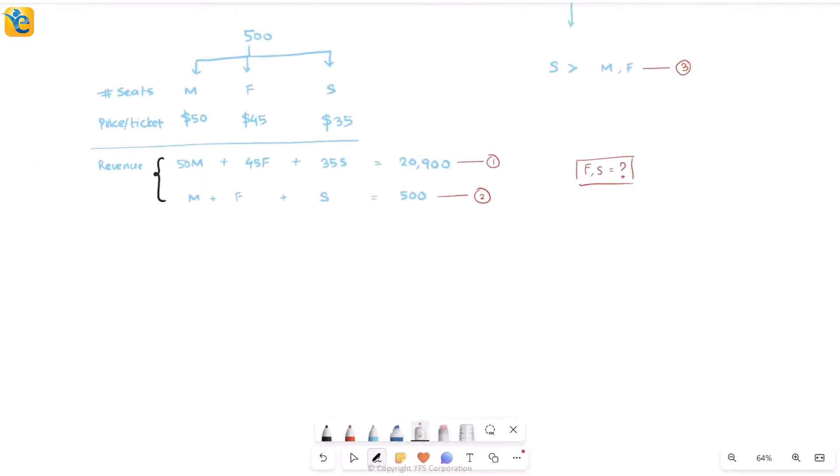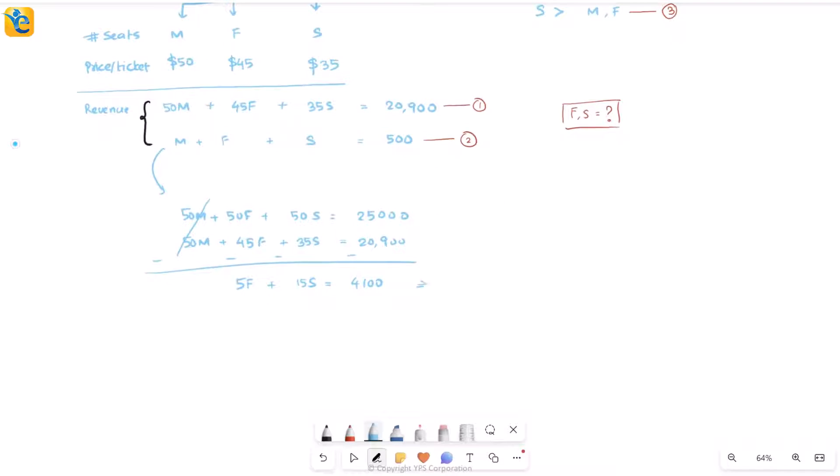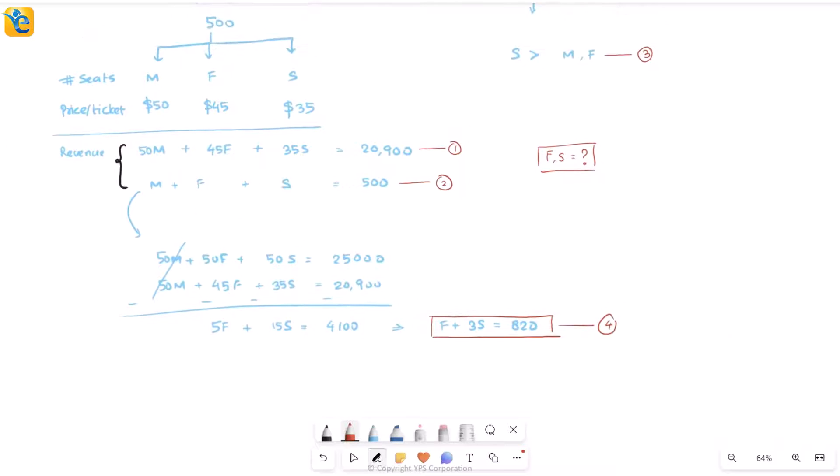If I'm interested in f and s, I have to get rid of this m. You can eliminate m from these two equations by multiplying the second one by 50. The second equation becomes 50m + 50f + 50s = 25,000. When you subtract the two, the m's will cancel each other out, and you will only be left with 5f + 15s = 4,100. We can further simplify this by taking 5 common, so f + 3s = 820. Now I have a relationship between the two quantities that I am interested in.